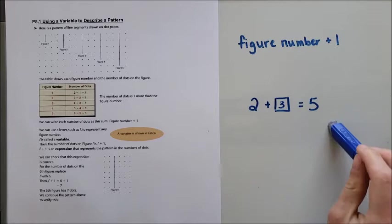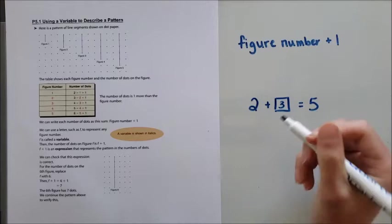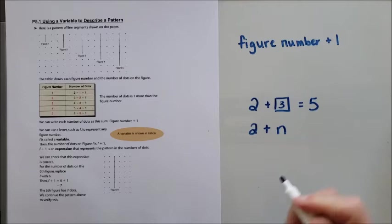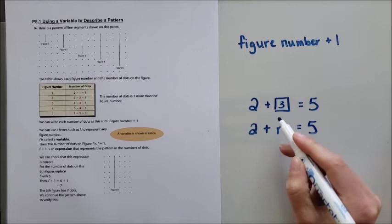And really what we're going to be doing in this section is pretty much the same thing except for instead of putting a three we're going to say two plus some number is equal to five. It means the same thing, we're just representing it a little bit different.